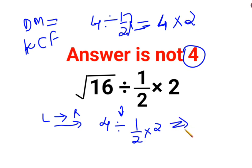So this is mainly coming out to be 4 divided by half is 8, multiplied by 2. So the answer for this question is supposed to be 16.